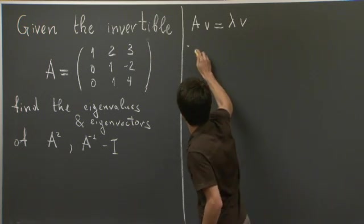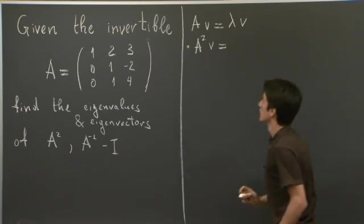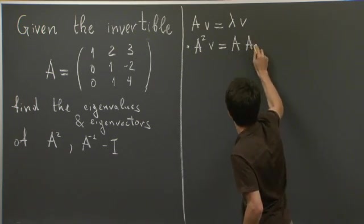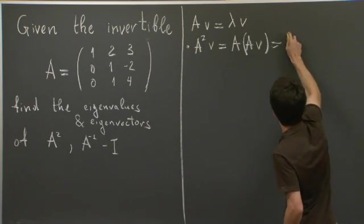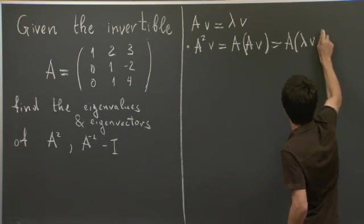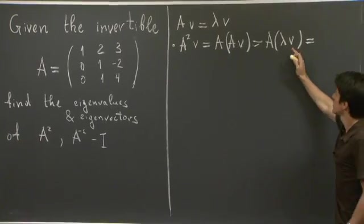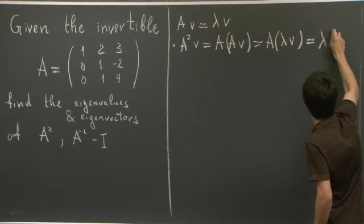Then if we hit V with A squared, we can write it as A times A V, but A V is lambda V, right? So we have A lambda V. Lambda is a scalar, so we can move it in front and get lambda A V.